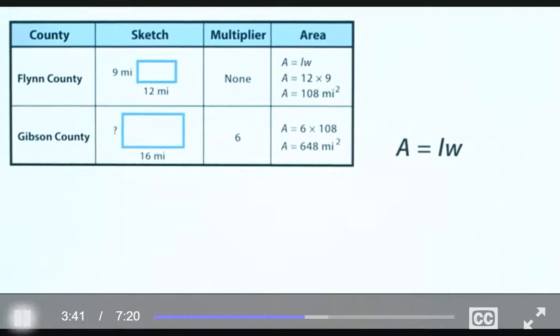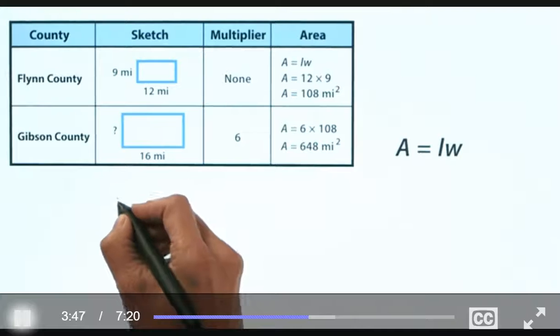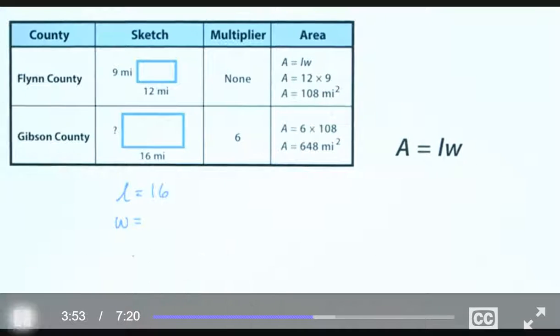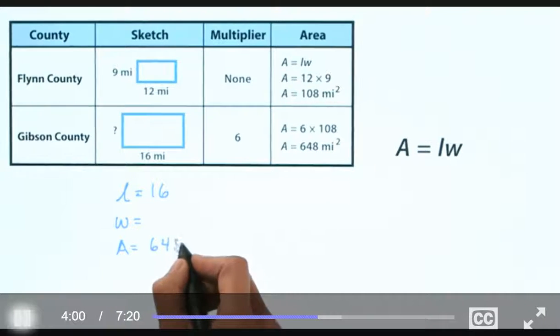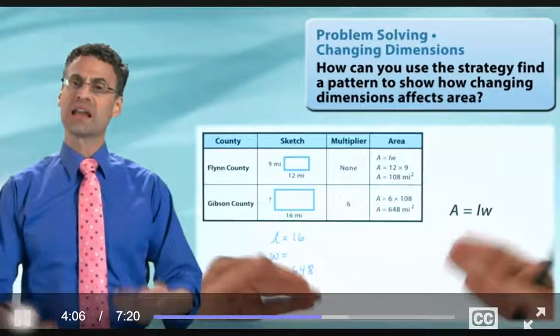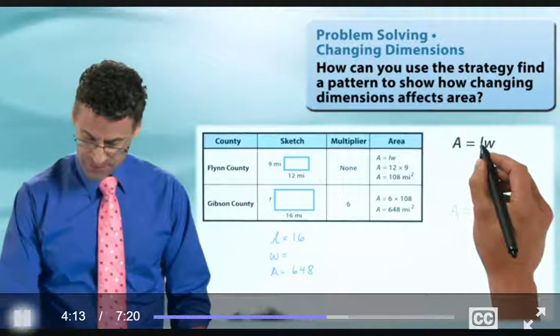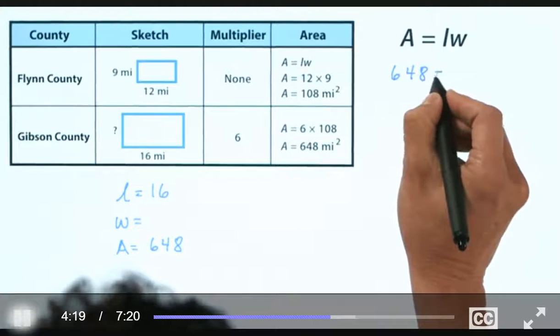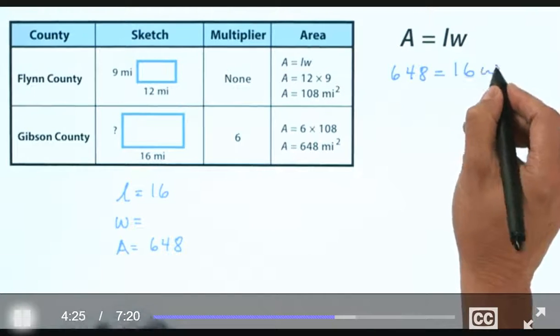And what do we know? Well, what we know now is that for Gibson County, we know that the length equals 16 and the width is what's a mystery. But we know the area. So, we have that the area is 648. And as we've seen before, if we know two of these puzzle pieces, that will automatically give us the third puzzle piece. We just have to put them into this formula. So, if I now put them into this formula, let's take a look at how it would look. So, what I see now is 648 is equal to the length, which is 16, times the width, which is the mystery, w.